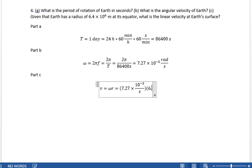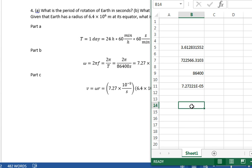Alright, 6.4 times 10 to the 6th, we write that in Excel as 6.4e6, and we're looking for the product of the radius times the angular velocity. It's 4.1.